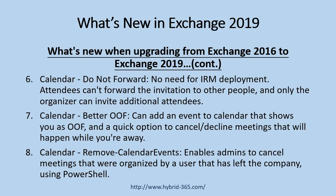A major change is that Exchange 2019 supports up to 256 GB of memory and 48 CPU cores. You can now configure Do Not Forward for calendar invites without any need for IRM deployment. It will prevent attendees from forwarding the invitation to other people and will allow only the organizer to invite additional attendees.